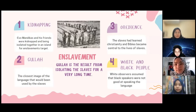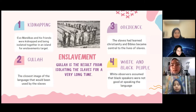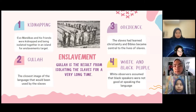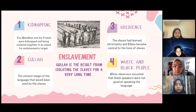So, why and how does Gullah come to exist? Gullah exists as a result of kidnapping and isolating slaves for a very long period. Evil Mandika Maninka men and their companions were kidnapped and isolated together on an island for enslavement. This is where they tried to communicate with all the ability and knowledge they had from African and English language, mixing them together for understanding. Hence, Gullah is the closest image we can get of the language that was used by the slaves during that century.